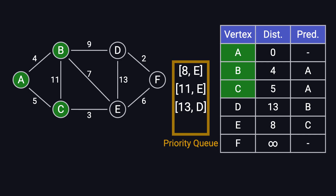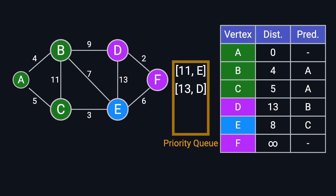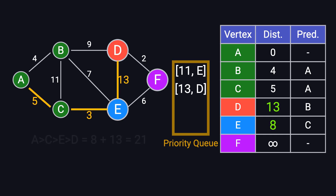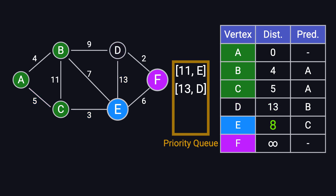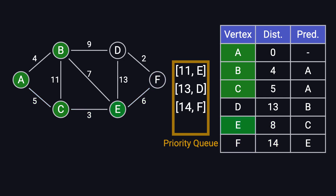The priority queue now contains 8E, 11E, and 13D. The shortest node is E, so we process it next. E is connected to B, C, D, and F. Since B and C have already been processed, we skip them. For D, going through E costs 8 plus 13 equals 21, which is worse than the current shortest distance of 13, so we don't update it. For F, going through E costs 8 plus 6 equals 14, which is better than infinity. So, we update F's shortest distance to 14, set E as its predecessor, and push 14F into the queue. Finally, we mark E as processed.